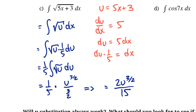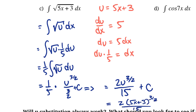Are we done? No — we actually need that plus C, since this is an indefinite integral. We also don't want the u, since u wasn't in the original equation. So we can substitute back: u is just 5x + 3. Plugging that back in gives us 2(5x + 3)^(3/2) over 15 plus C. That is the integral of our original function.